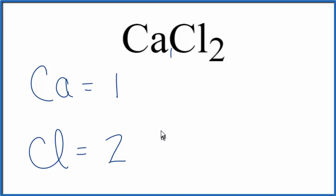If you were asked to find the number of atoms, for example chlorine atoms, in one mole of CaCl2, you just take the number of chlorine atoms, this two here, and multiply that by Avogadro's number.